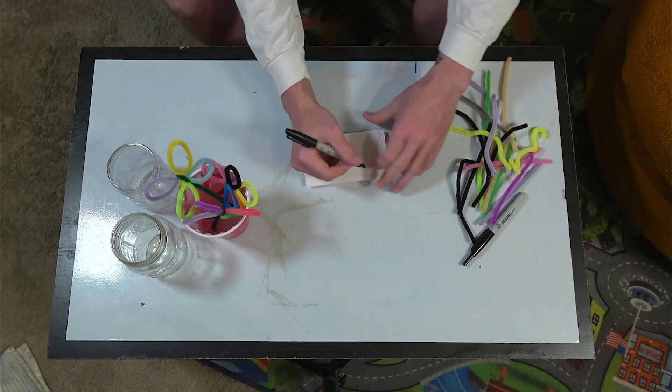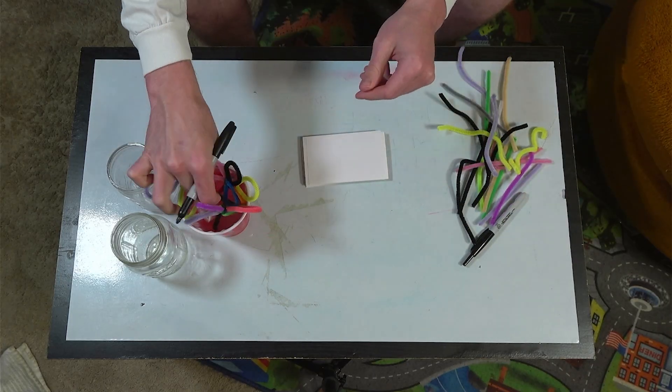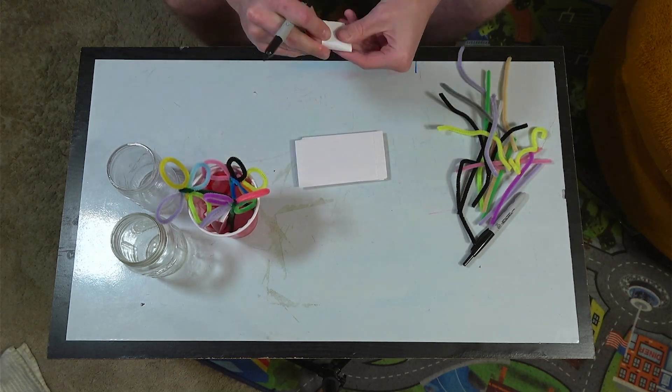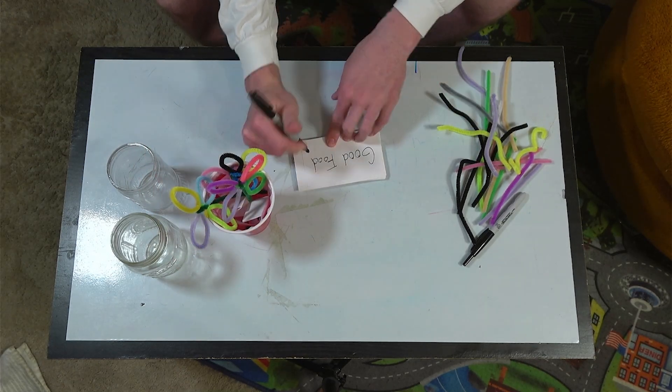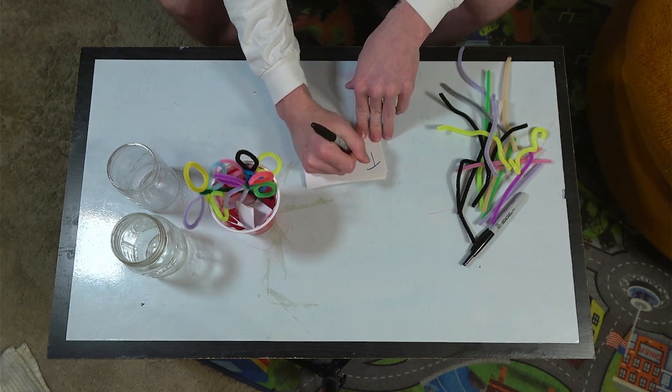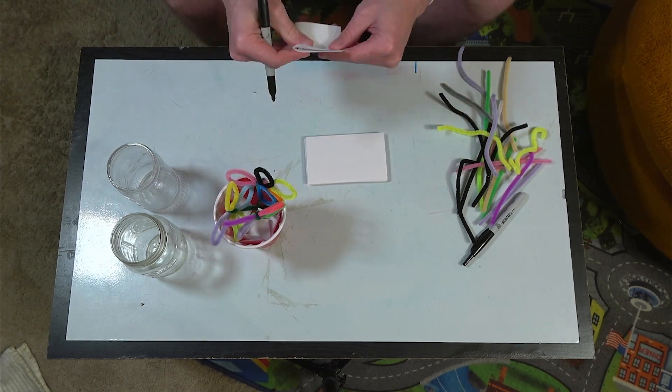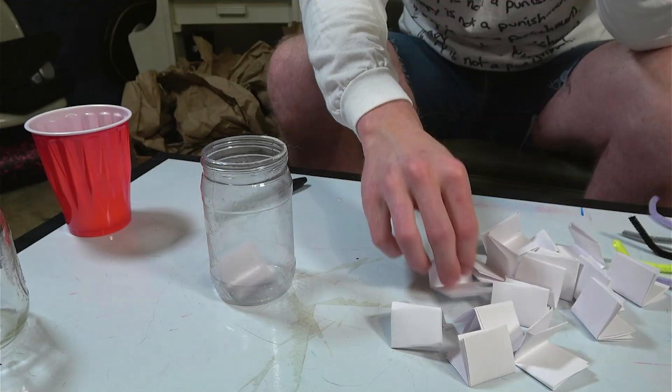For this part you can either choose to write down a lot of things you're grateful for all at once, or it can become a go-to activity on a daily, weekly, or monthly basis. You're going to write down things you're grateful for on slips of paper and then put them in the jar with your flowers.